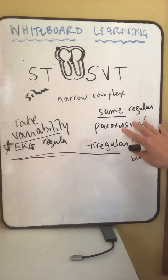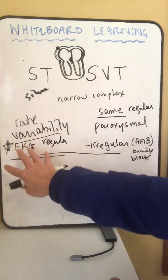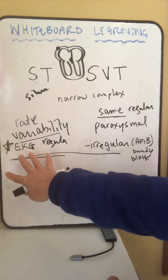Paroxysmal, automatically an SVT. Rate variability, automatically not SVT, automatically sinus.